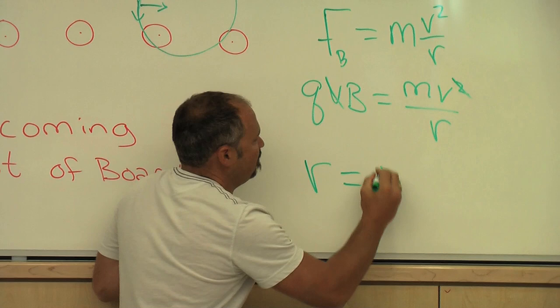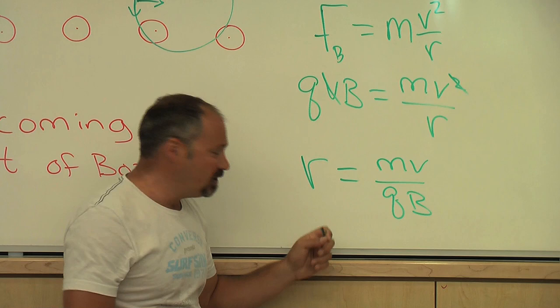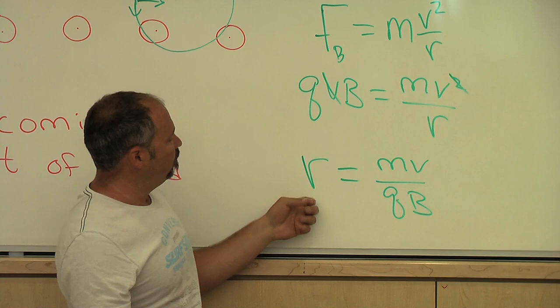So plug in the mass of the particle, the speed that the particle's going at, its charge, the magnitude of the magnetic field, and you get the radius of this circle. So that's the physics of what's going on. In the next video, I'll show you a little demonstration.